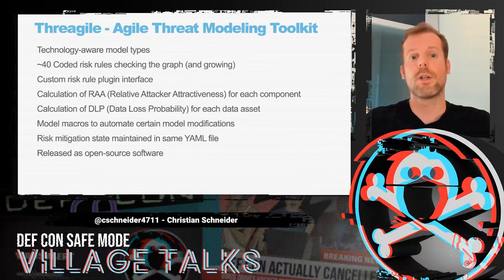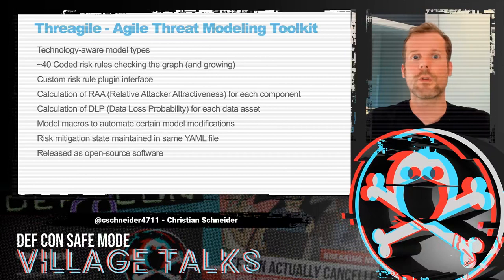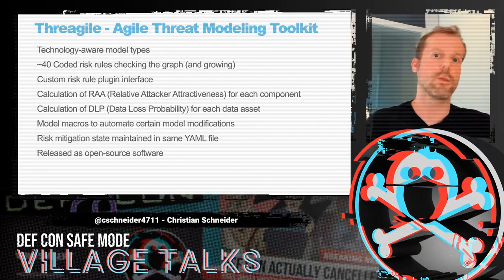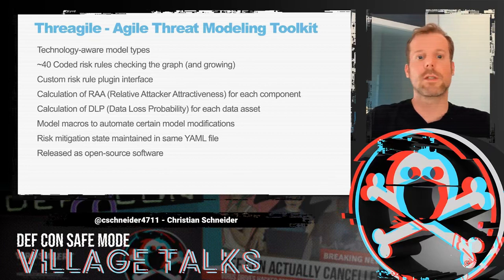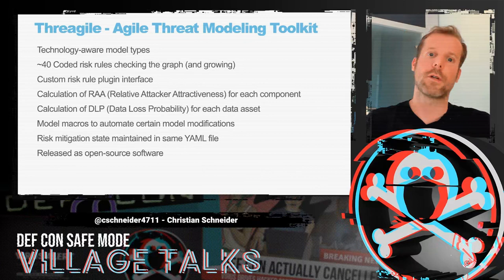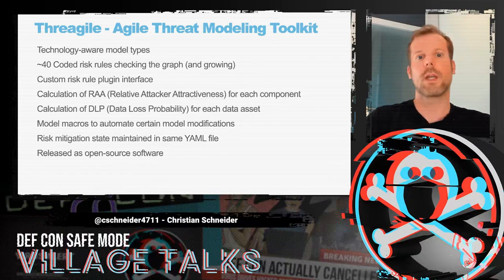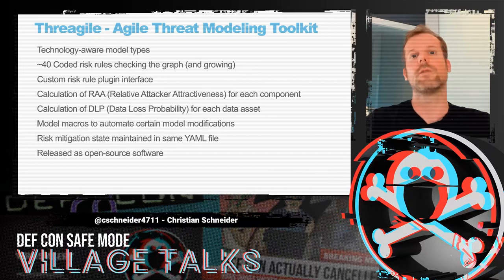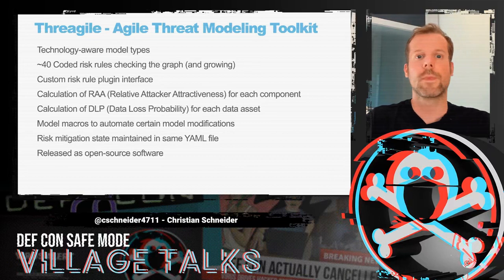ThreadGile is a technology-aware way of modeling your architecture. You define what type of technology and protocols are used, so it understands whether it's encrypted or not. It has around 40 risk rules, and that's growing. You can even create custom risk rules. It calculates attacker attractiveness and data loss probabilities. You can automate things using model macros in a wizard-style approach. Risk mitigation can be maintained in the YAML file, so risk tracking and remaining accepted risks are documented that way. And of course, it's released as open source software.